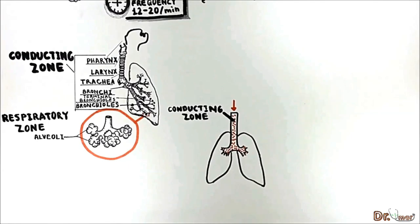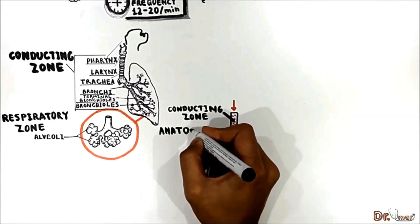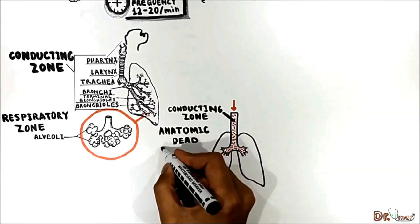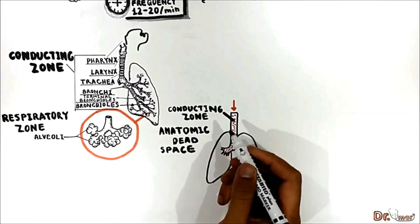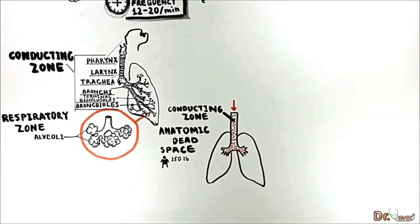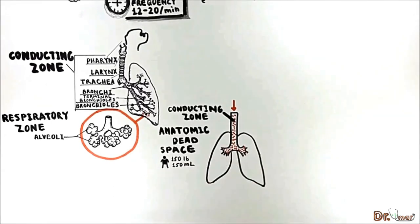These respiratory passages where gas exchange does not occur are called the anatomical dead space. The size of the anatomical dead space in mils is approximately equal to a person's weight in pounds. Thus, a 150-pound individual has an anatomical dead space of 150 mils.